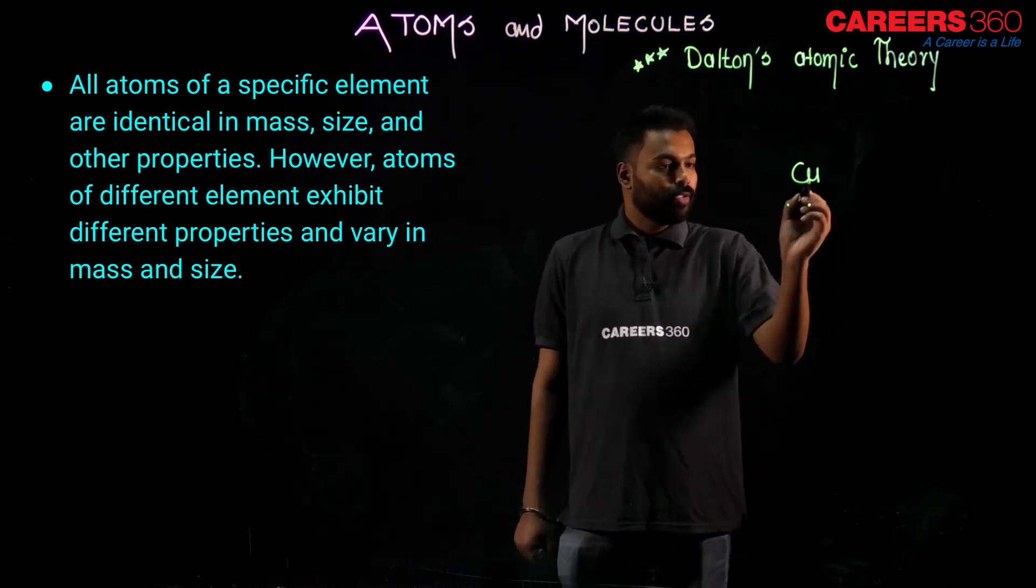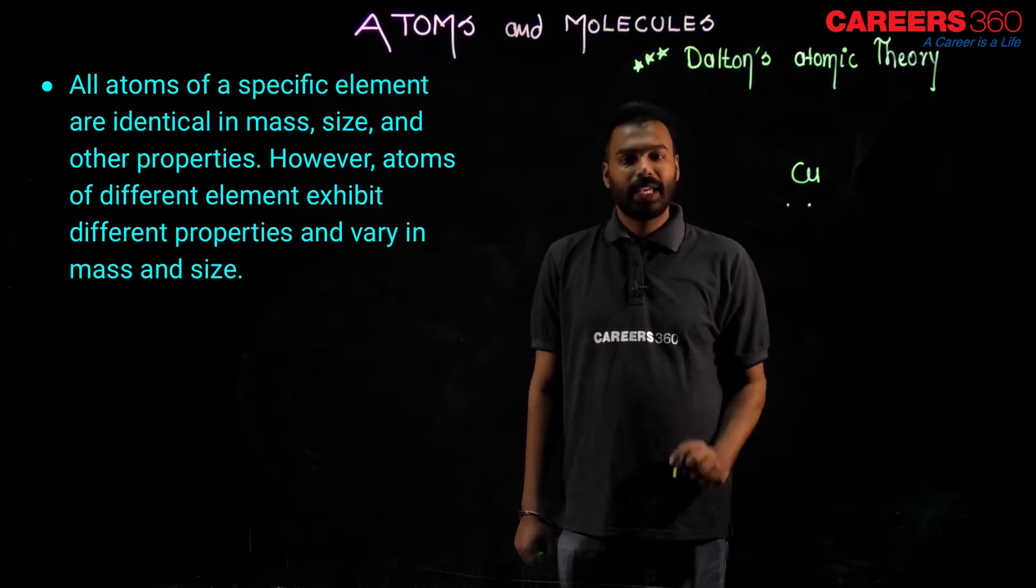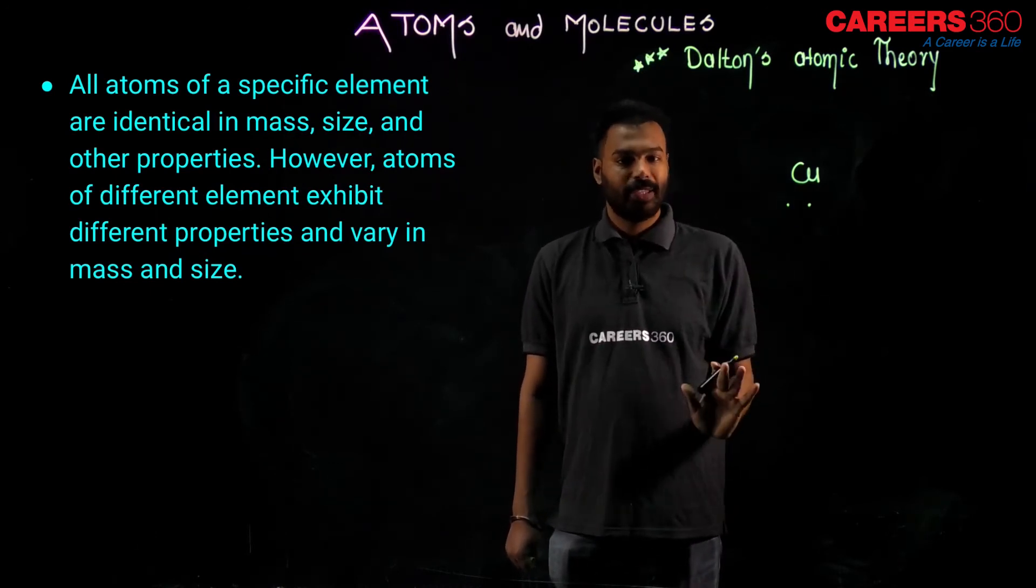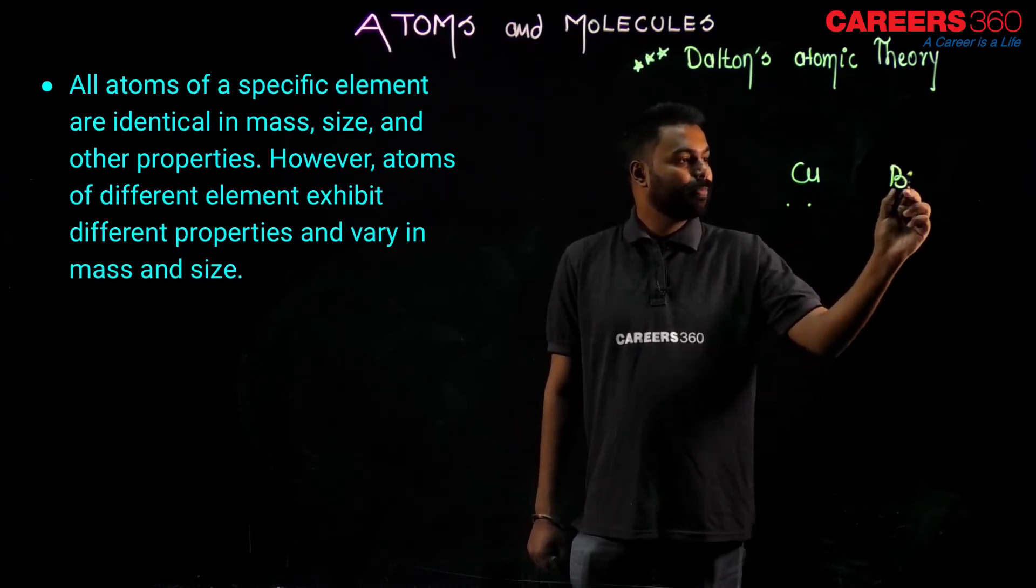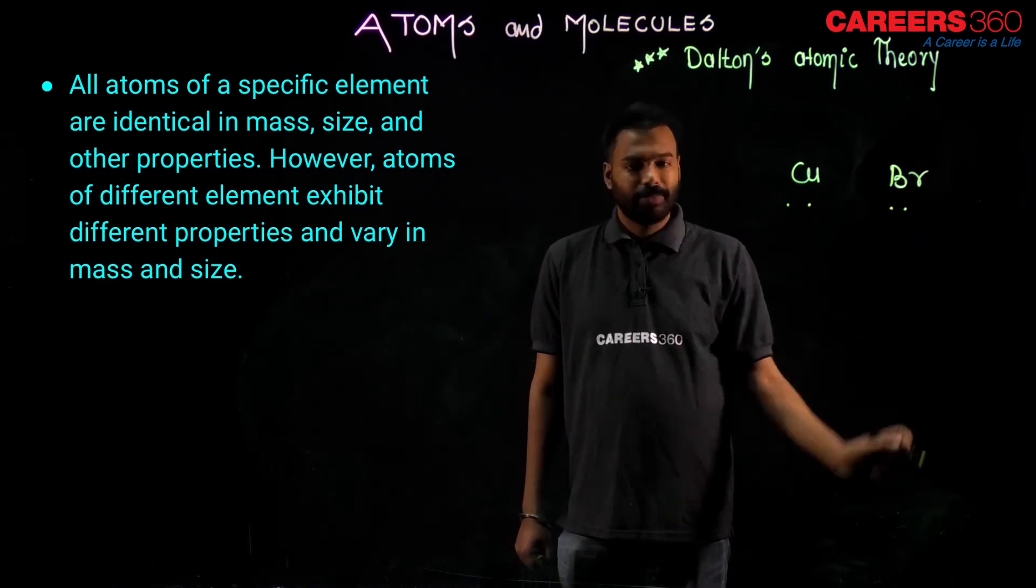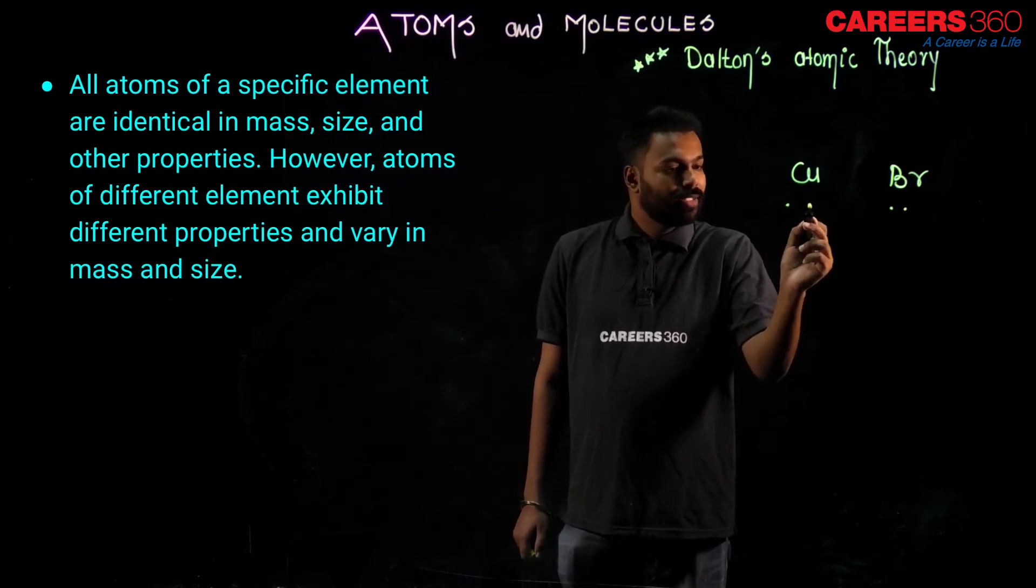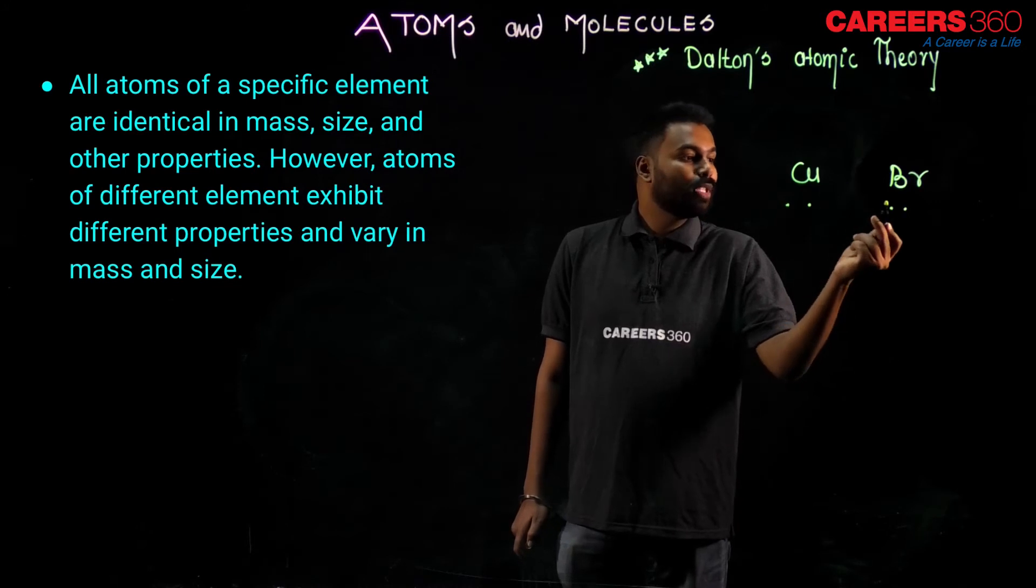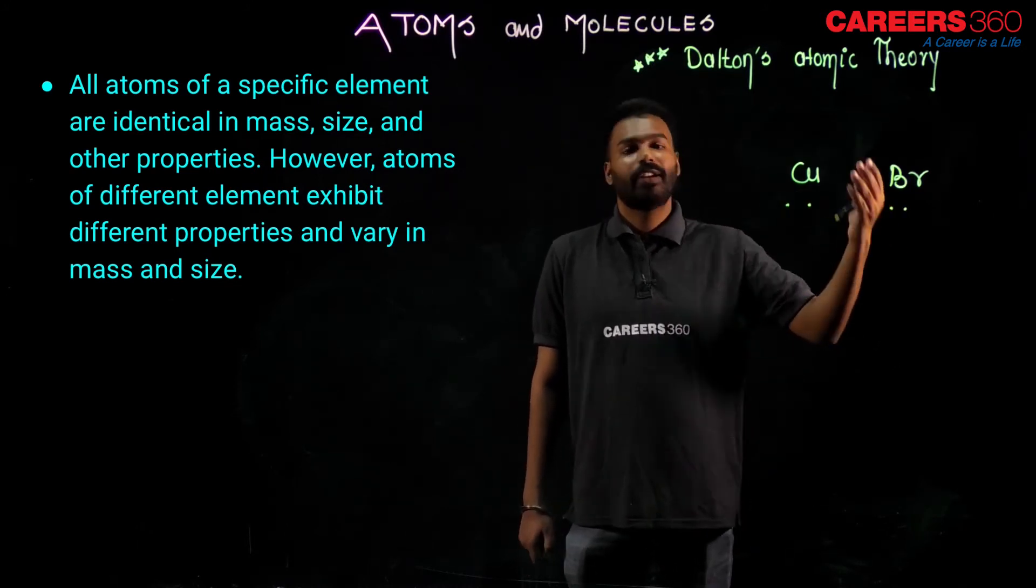This copper has supposed two atoms, so both will look the same. If it has 2000 atoms, all 2000 will look the same. Now let us compare this copper with bromine atom. Bromine has suppose this two atom. No doubt, this atom and this atom looks like same. But copper's atom cannot look like same as bromine. Yes or no? Because that is different atom.